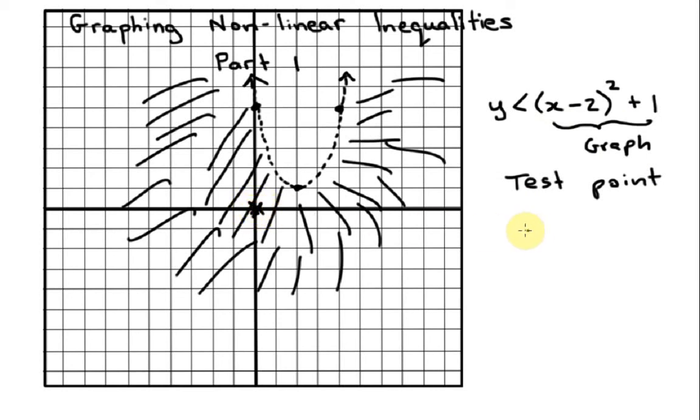So we've got 0, and then question mark, is that less than 0 minus 2 squared plus 1? So I want to see if this comes out as true. 0 is less than, now this would be negative 2 squared, so 4, plus 1. I think you can see pretty clearly that 0 is less than 5. This does work, and if it's true for (0, 0), then we did shade the correct side of this quadratic.